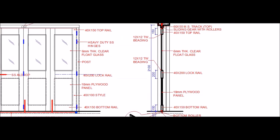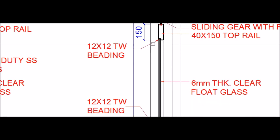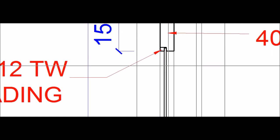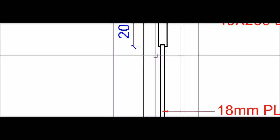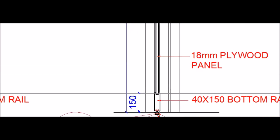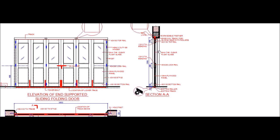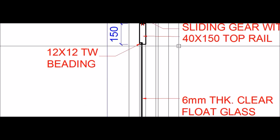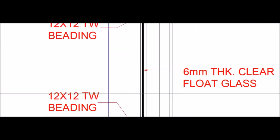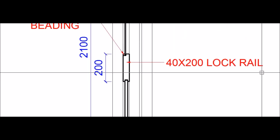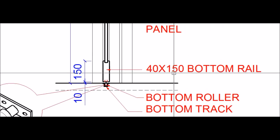The same can be seen in the section. The top portion consists of 6 mm thick clear float glass fixed to the door shutter by means of 12 by 12 beading. The lower part of the shutter consists of an 18 mm plywood panel inserted into the members of the door shutter. The top member is called the top rail, normally 40 by 150; the central member is the lock rail, 40 by 200; and the lower portion is the bottom rail, 40 by 150.